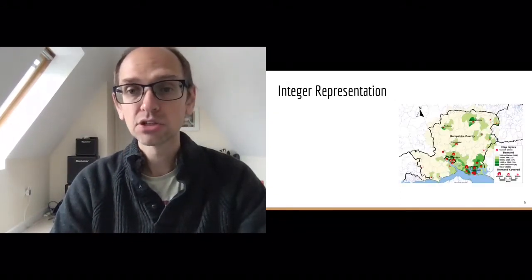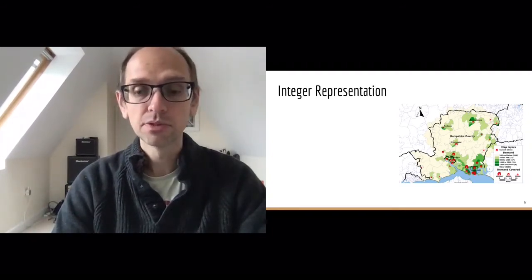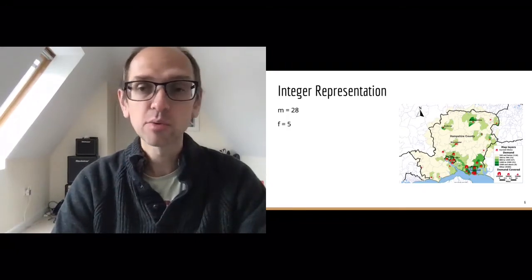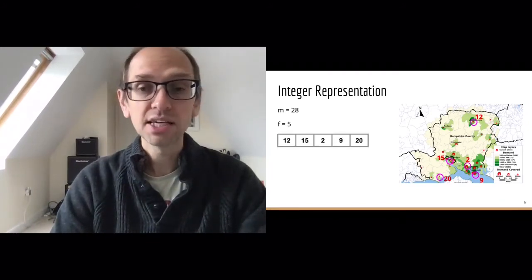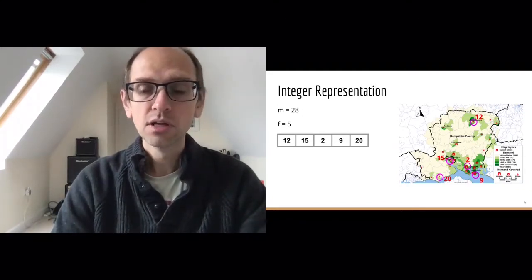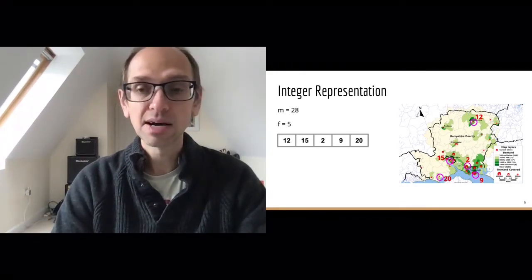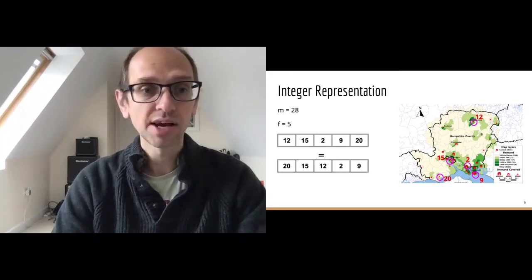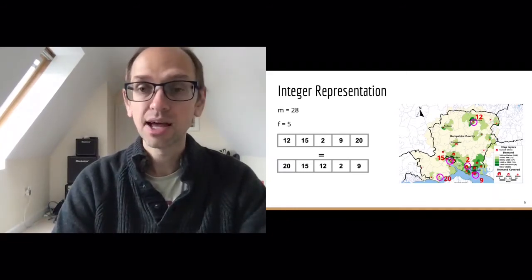To put some meat on the bone: in our Hampshire sexual health problem we've got 28 facilities and let's say we want to place five — facilities 20, 15, 12, 2, and 9. Here's a way to represent that as a chromosome in integer format. Ordering isn't important in this problem, so it doesn't matter which order the integers go into the array. A different ordering is completely equal — there's no difference in our cost.